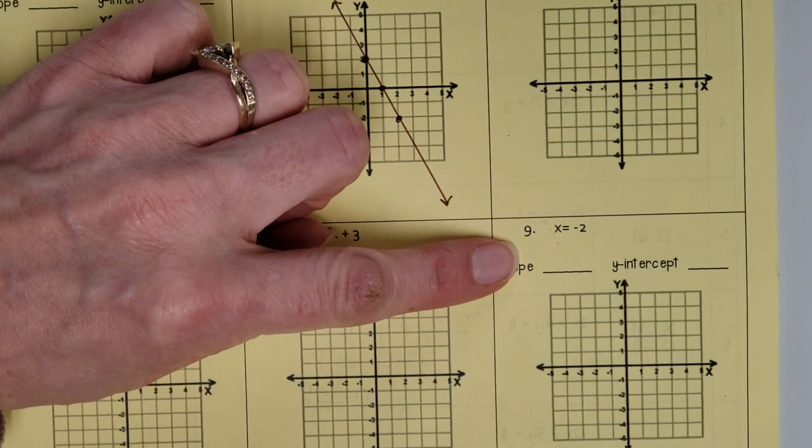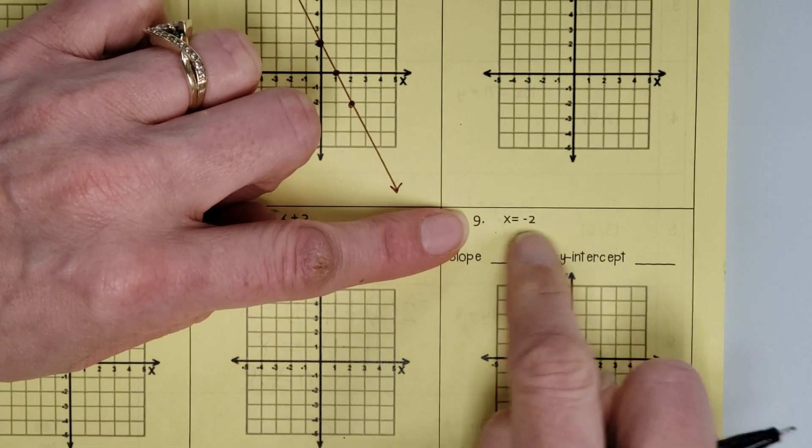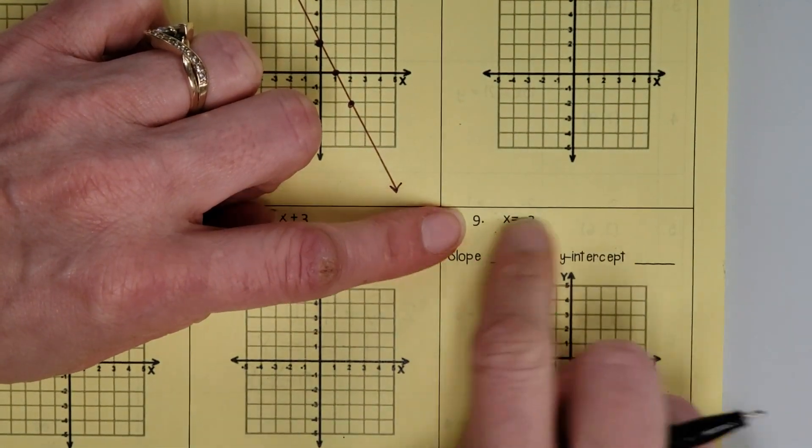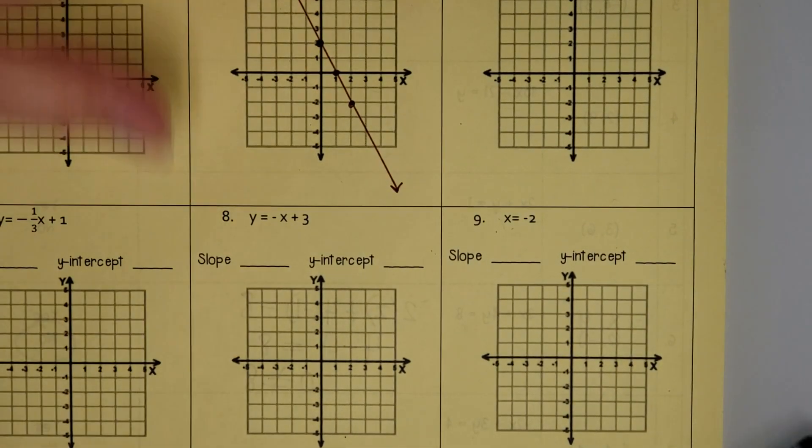On number 9 right here, just refer back to that green sheet we did when we talked about horizontal and vertical lines, that 4.0 stuff we did. That'll help you with number 9. Okay, guys, that's it. Thanks. Make sure you're behaving.